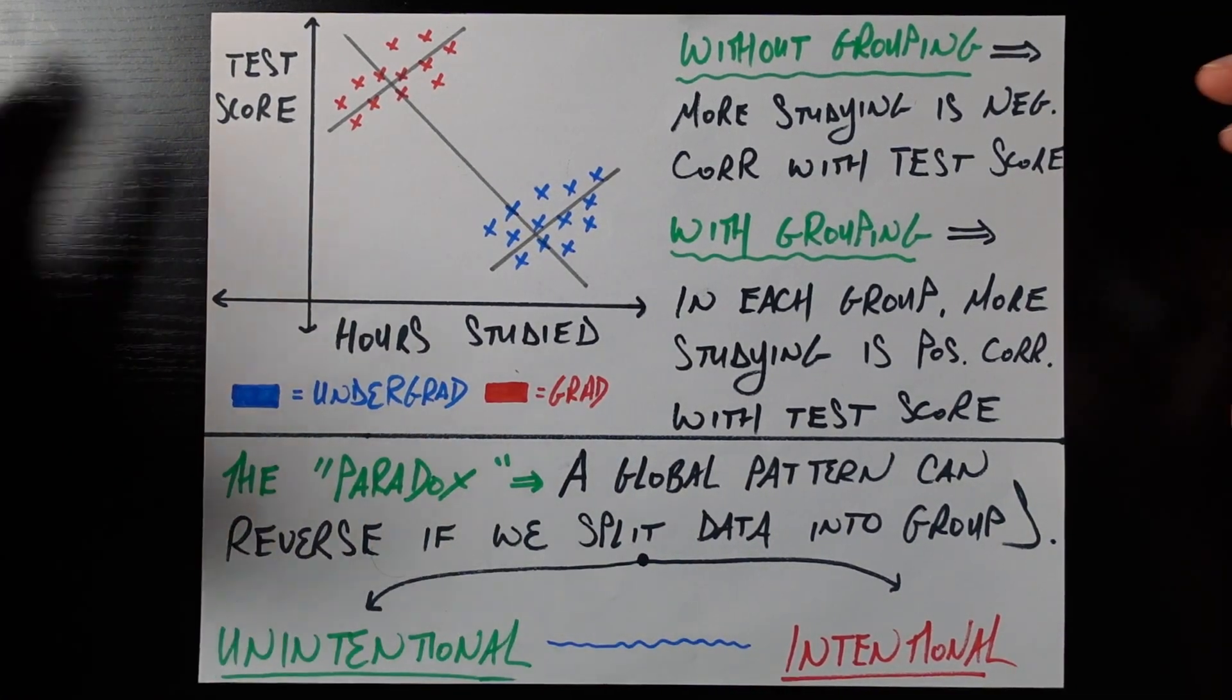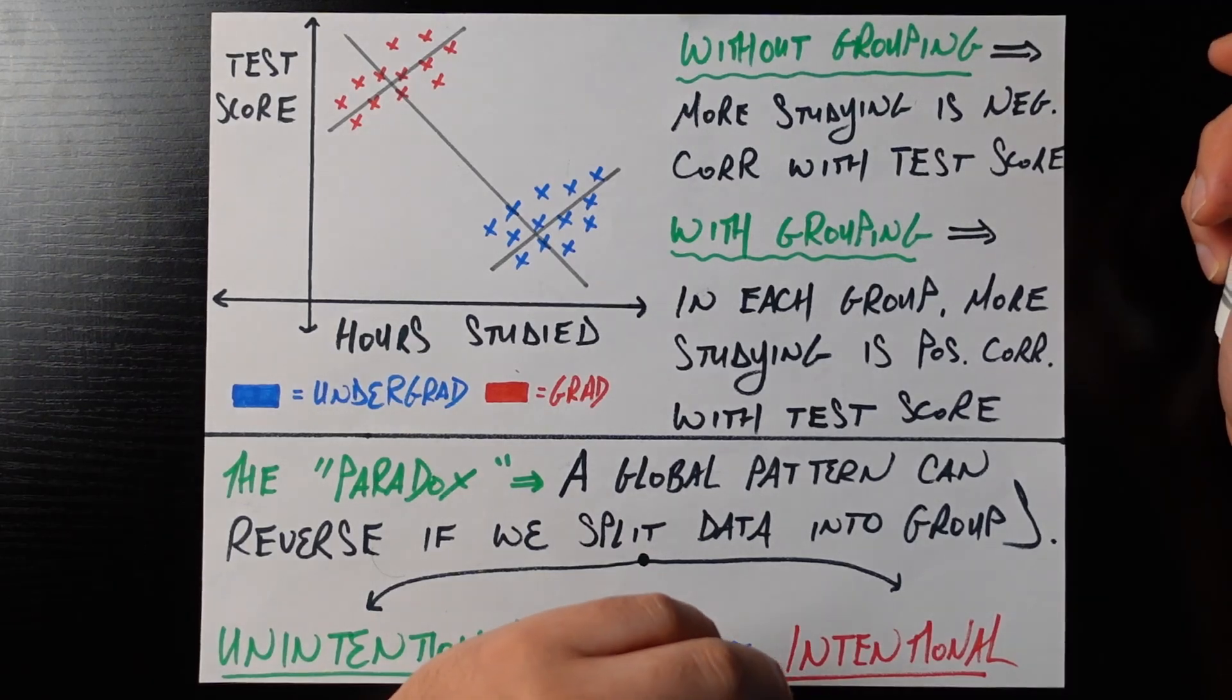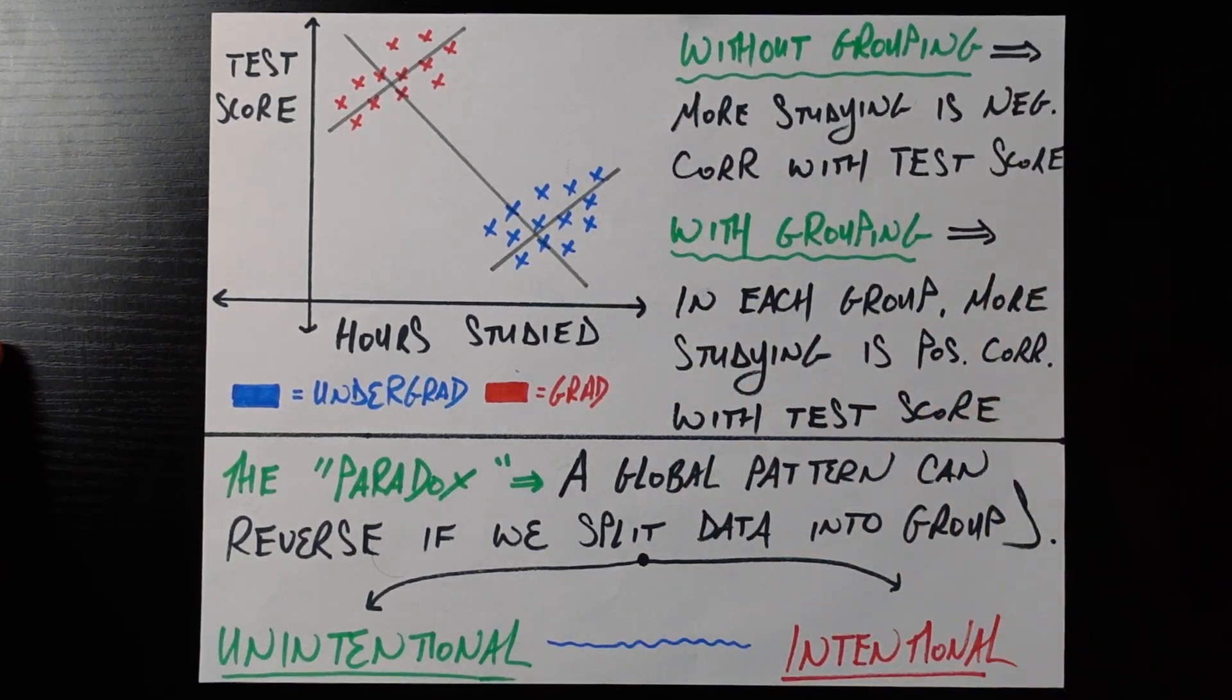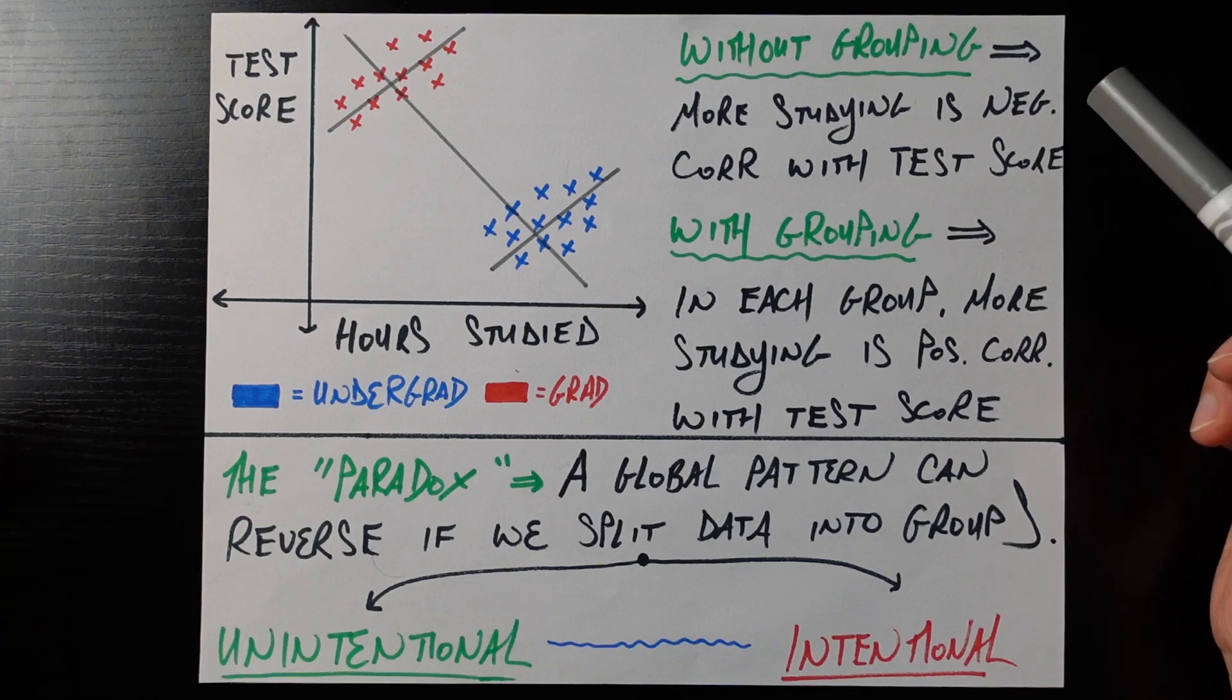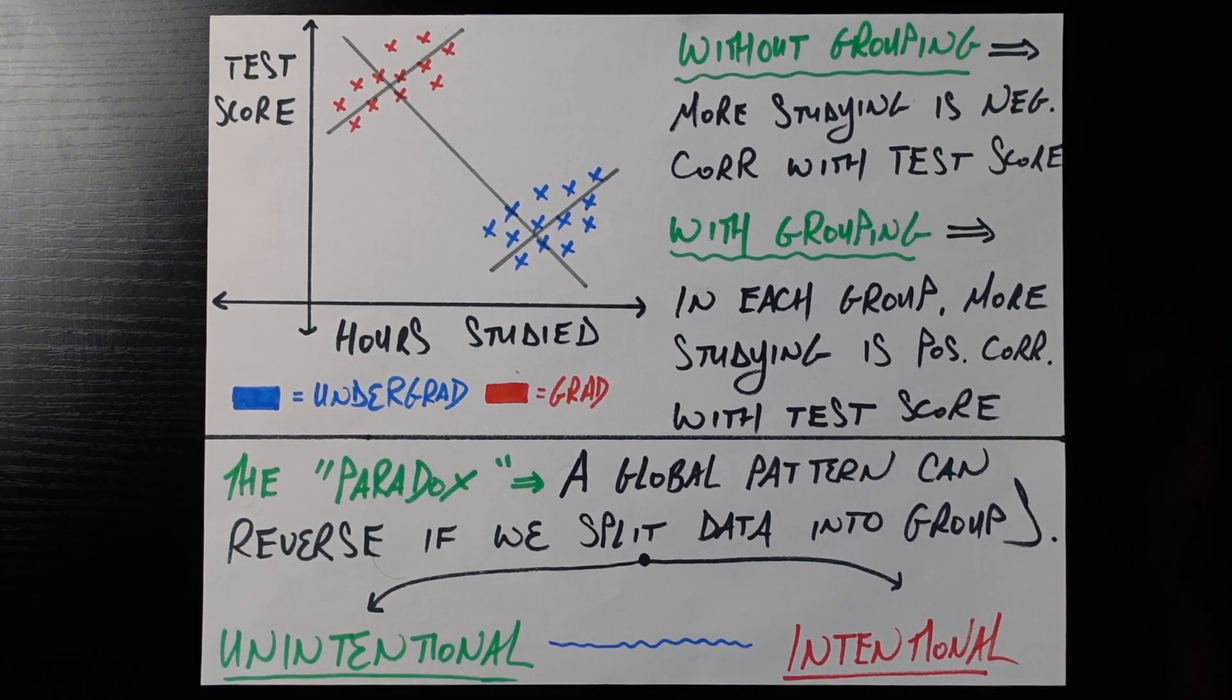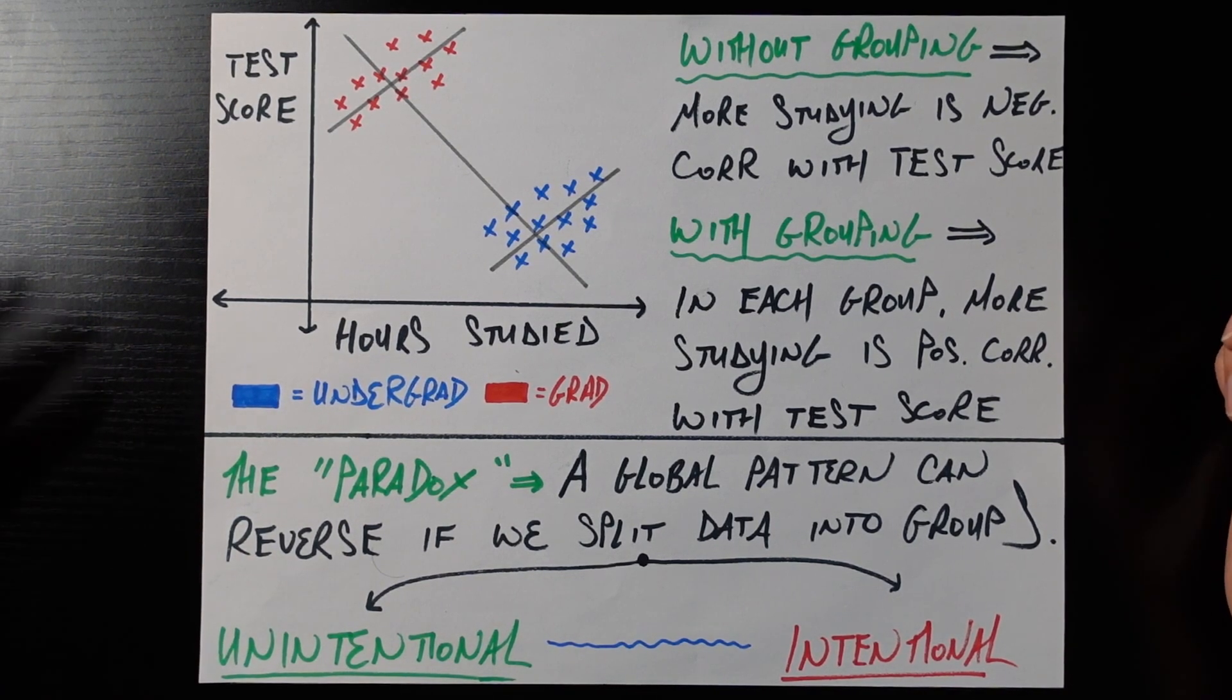Which leads to this really, really interesting situation. Again, just like before, where if we look at the data globally, it paints a negative relationship. But if we look at the data locally or break it up into groups, then we get a positive relationship. So without grouping, you could say that more studying is negatively correlated with test score. Don't study. It's just going to lead to a worse score. But if you do group, then you see that within each group, more studying is positively correlated with test score. No matter who you are, an undergraduate or a grad student, if you want a better score on the test, then you should study more. It would be the conclusion there.